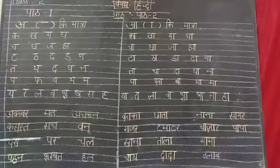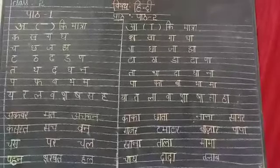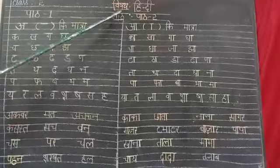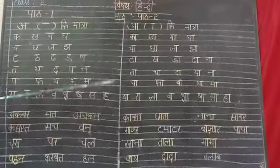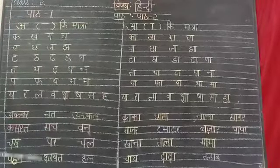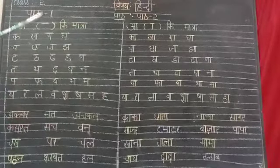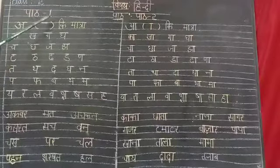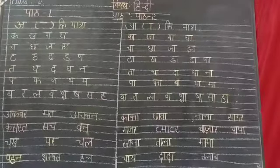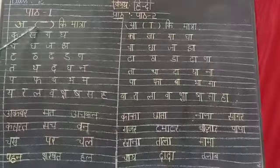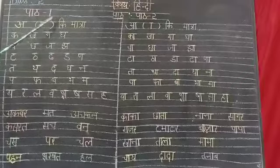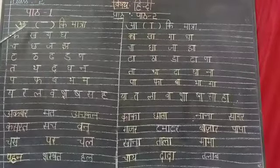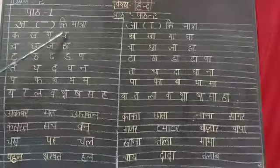Assalamualaikum. Today I am taking class for Vishal Hindi, part 2. Children, in the previous class you have learned part A. A-ki maatra - A-ki koi maatra nahi hoti. Us ka sirf shiru rekha hoti. Okay?